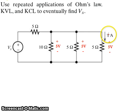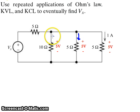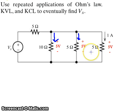Now let's talk about the current. We know that this current is 1 amp. The current through the other 5 ohm resistor can be found using Ohm's law: voltage is 5 volts, resistance is 5 ohms, so the current through that 5 ohm resistor is 1 amp. For the 10 ohm resistor, 5 volts divided by 10 ohms produces a total current of half an amp.